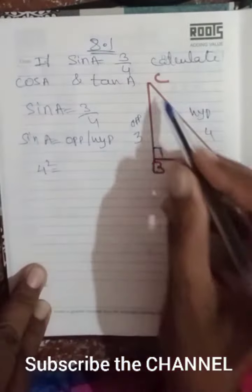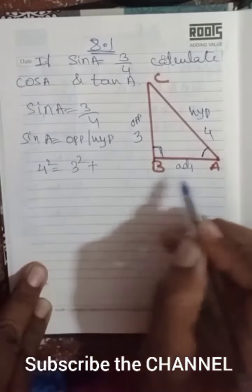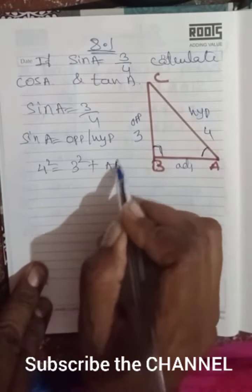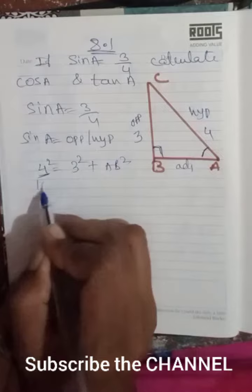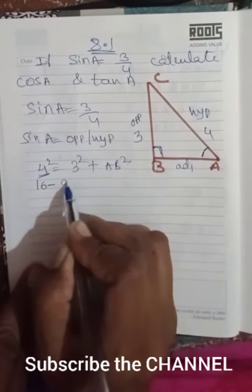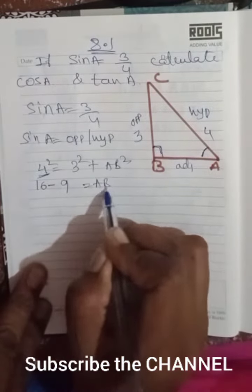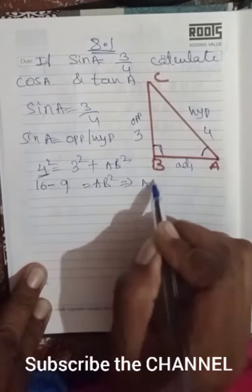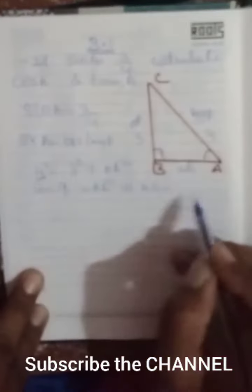I'll solve directly: 4 squared equals 3 squared plus AB squared, which we don't know. 4 squared is 16. Bringing this to the other side, it becomes 16 minus 9 equals AB squared.